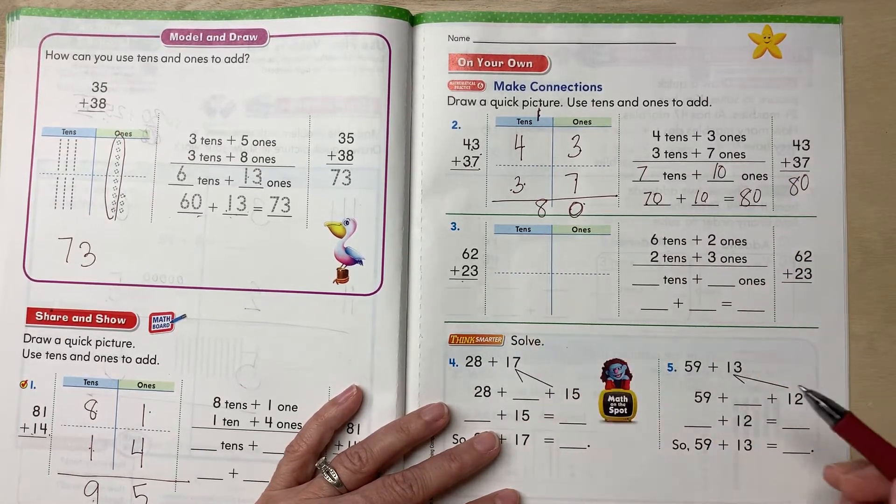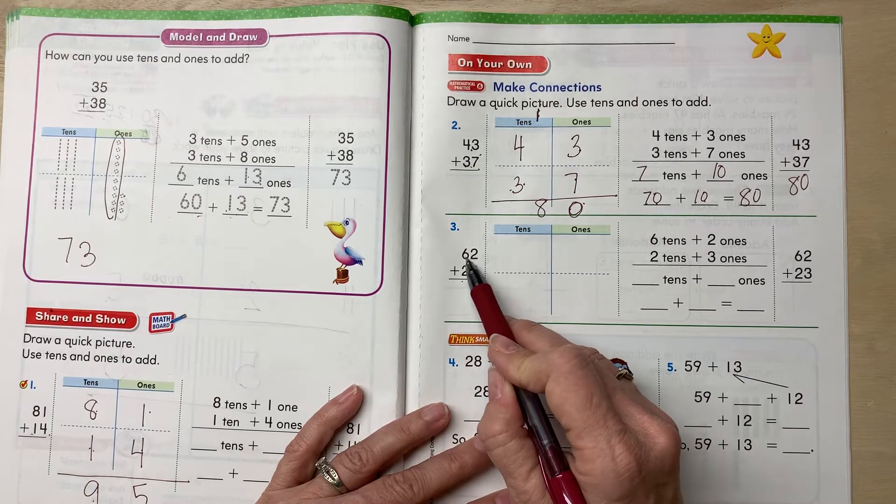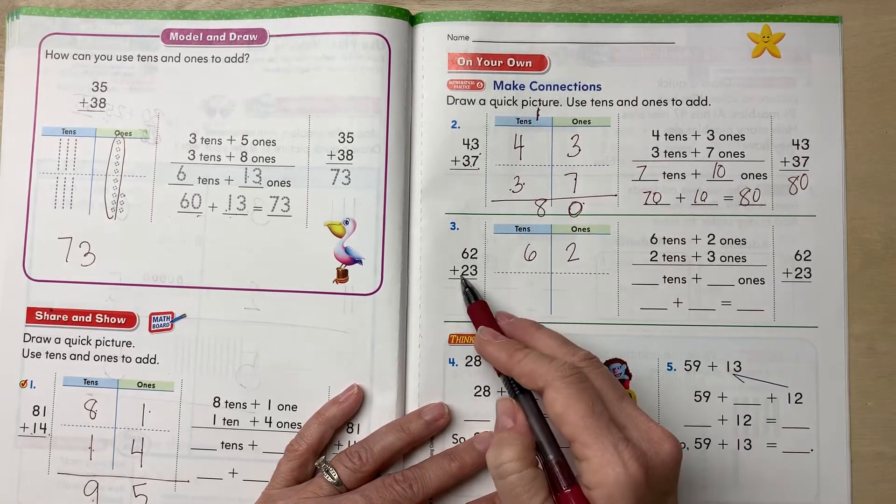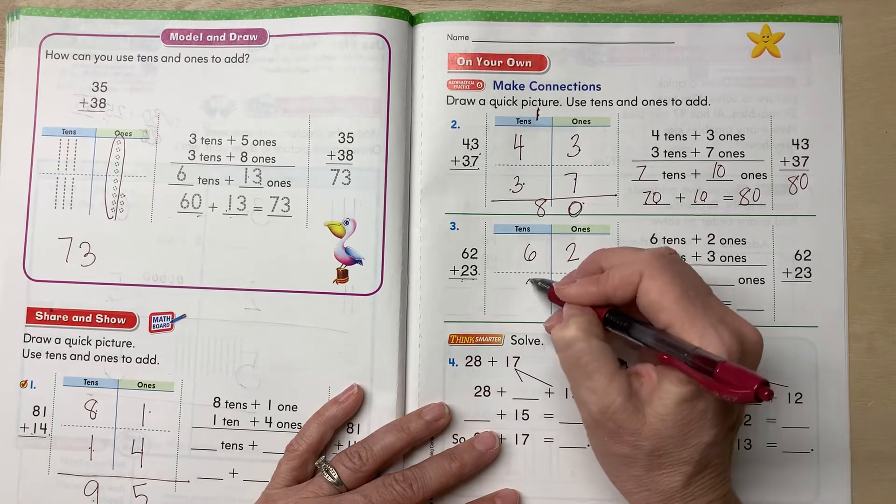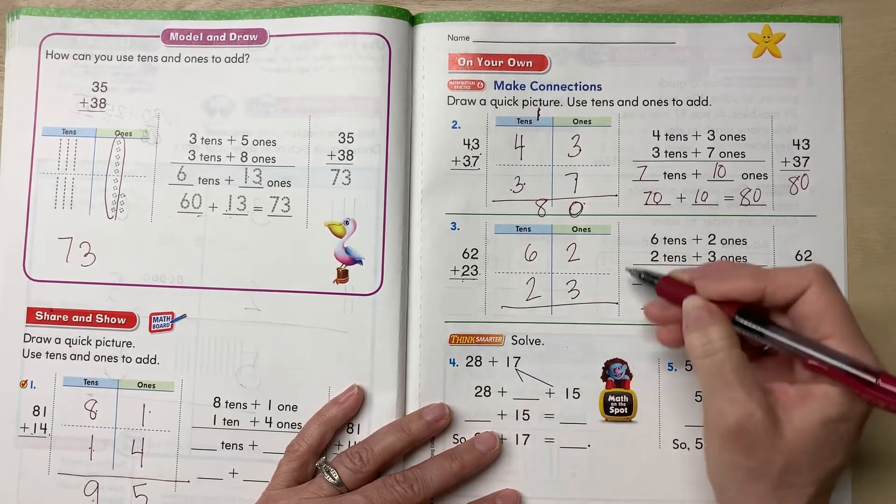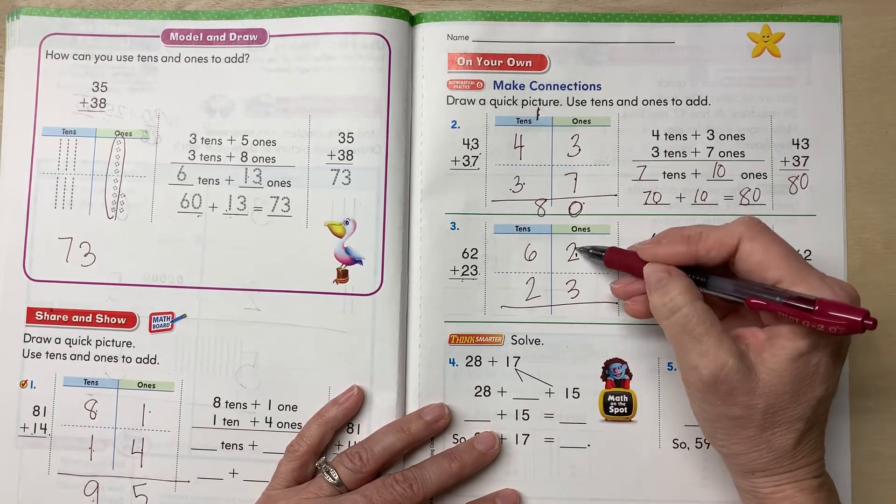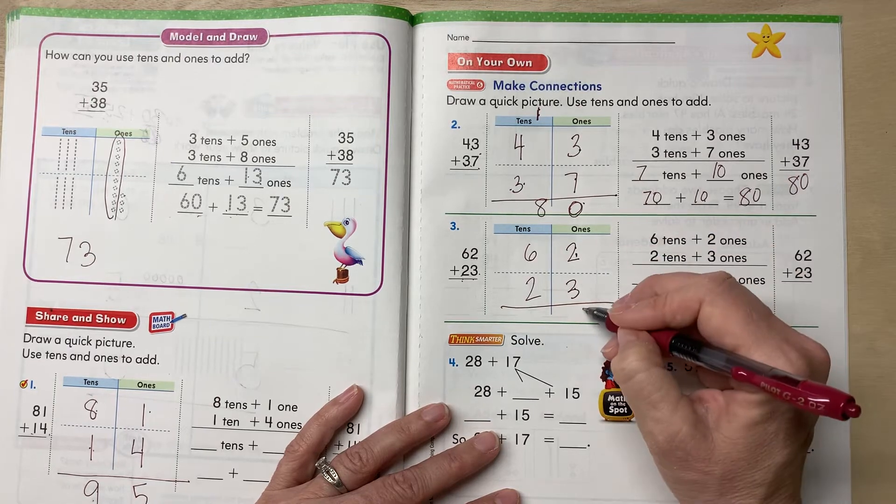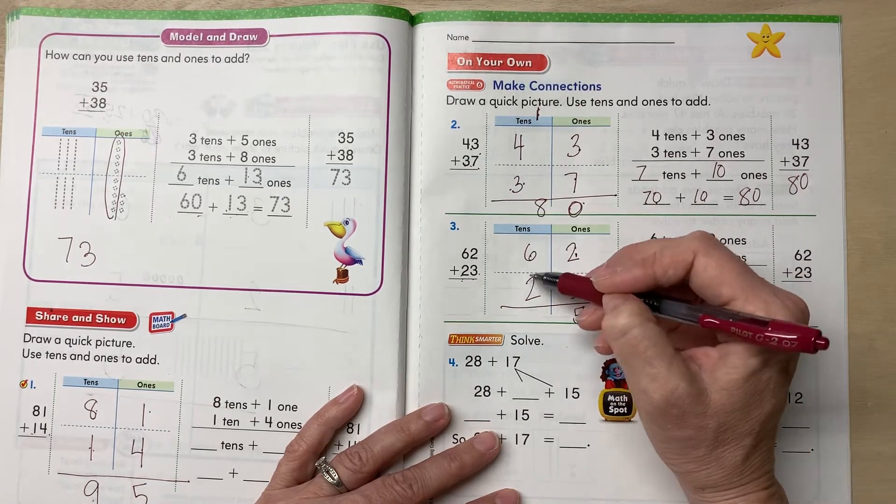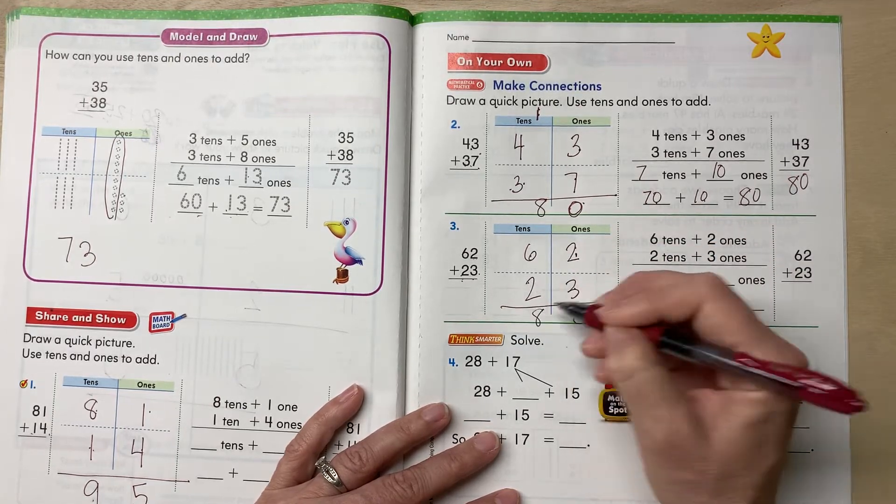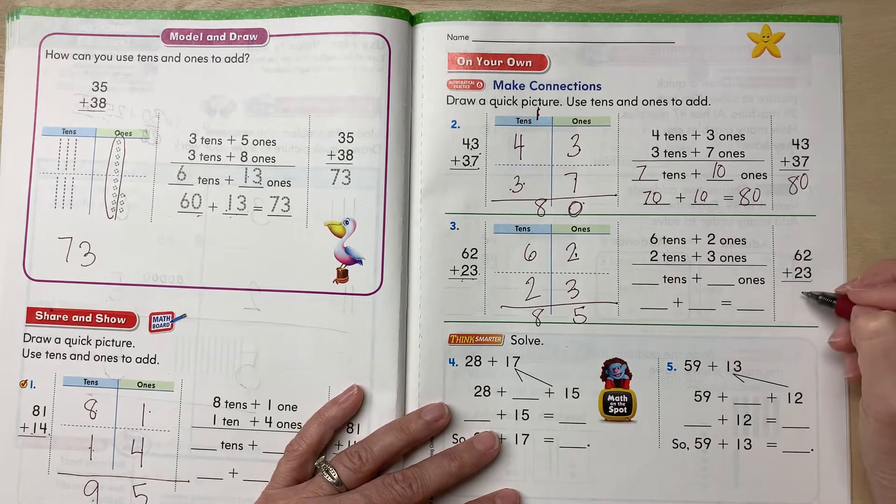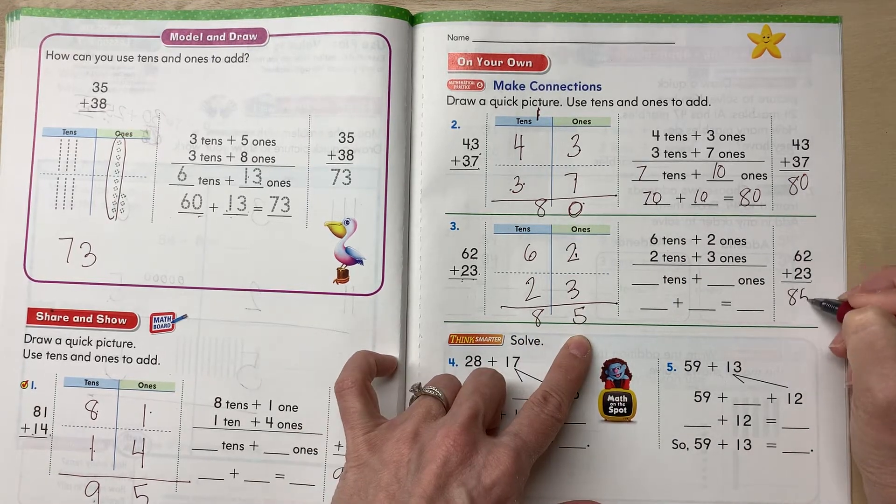All right, 62 and 23. 62 is six tens and two ones. And 23 is two tens and three ones. Let's add our ones first. Two and three is five ones. Six and two is eight tens. So 62 and 23 is 85.